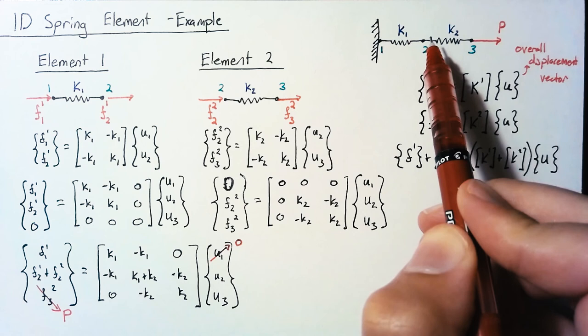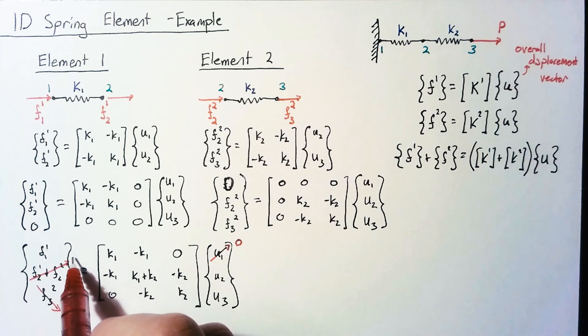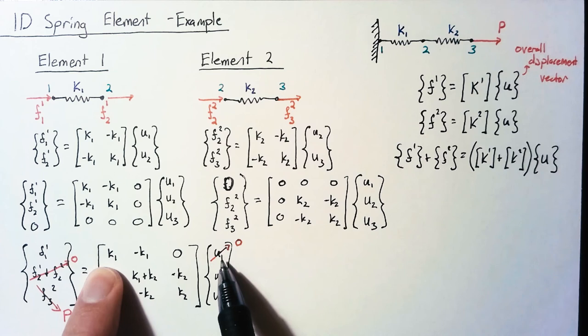So what do our equations say now? Well, if we look at this equation one, we get K1 times U1, which is zero, minus K1 times U2, which is going to be equal to F11.